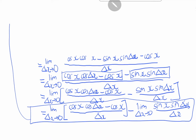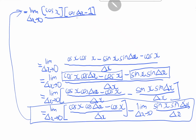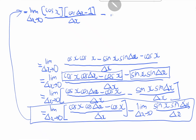Further simplifying, this equals the limit as delta x goes to 0 of cosine x · [cosine(delta x) minus 1] over delta x, minus the limit as delta x goes to 0 of sine x · sine(delta x) over delta x.